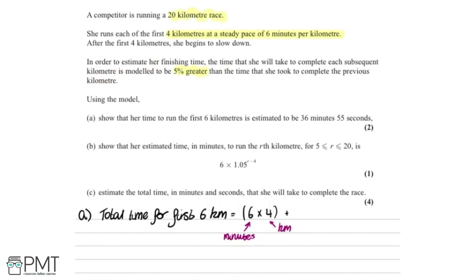So adding on to this, it took her 6 minutes to run the previous kilometer, however it's 5% more than that, so we're going to times it by 1.05. So far we've got 4 kilometers here and another kilometer here, so we need to add one more kilometer to get to the total time for 6 kilometers. But again she slows down by 5%, so it's going to be 6 times 1.05 squared.